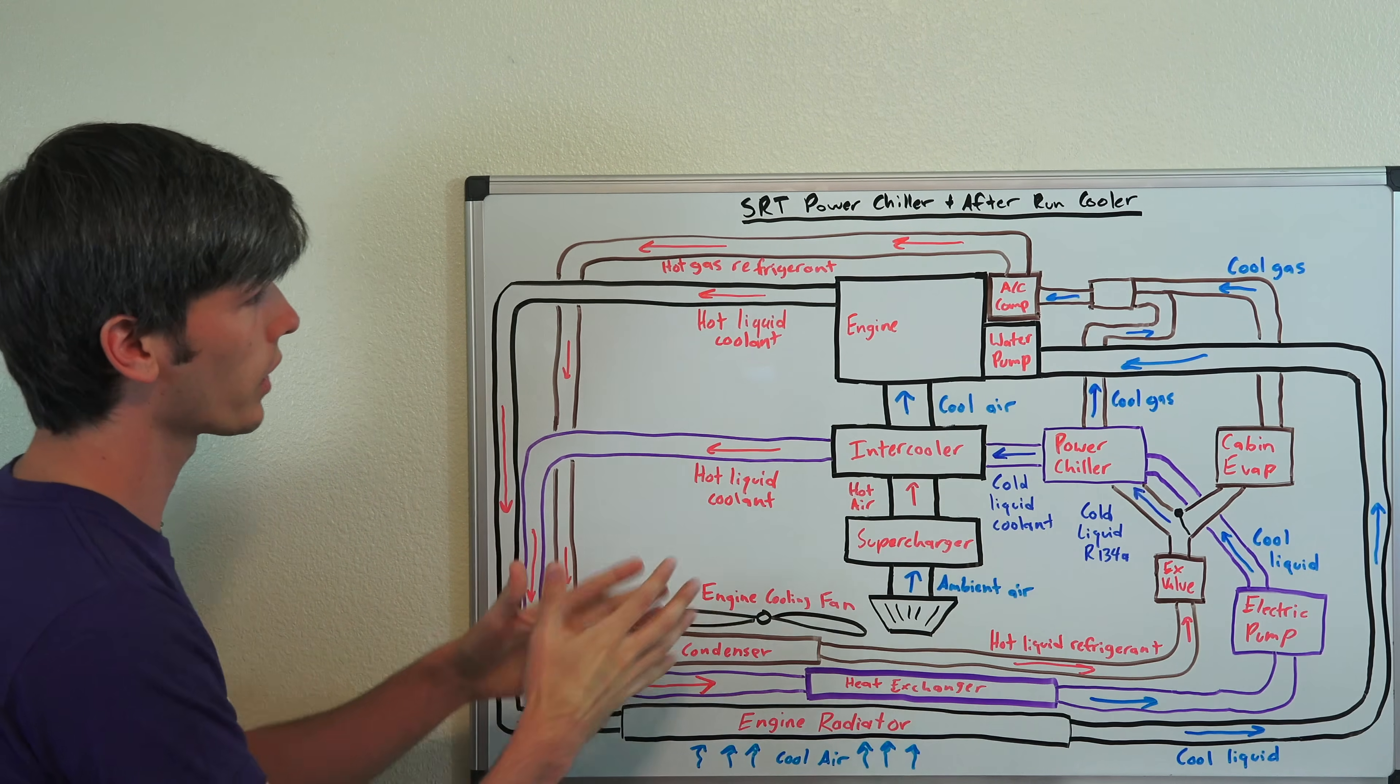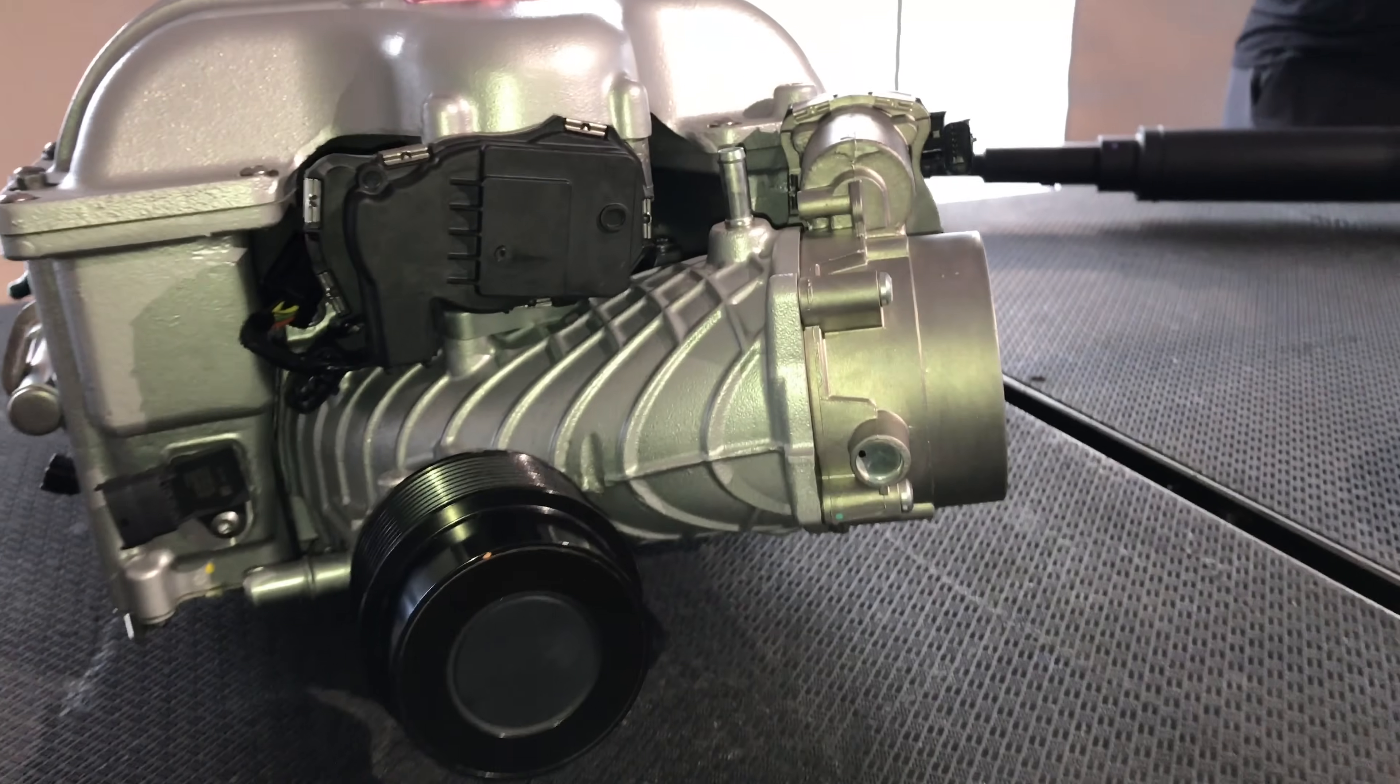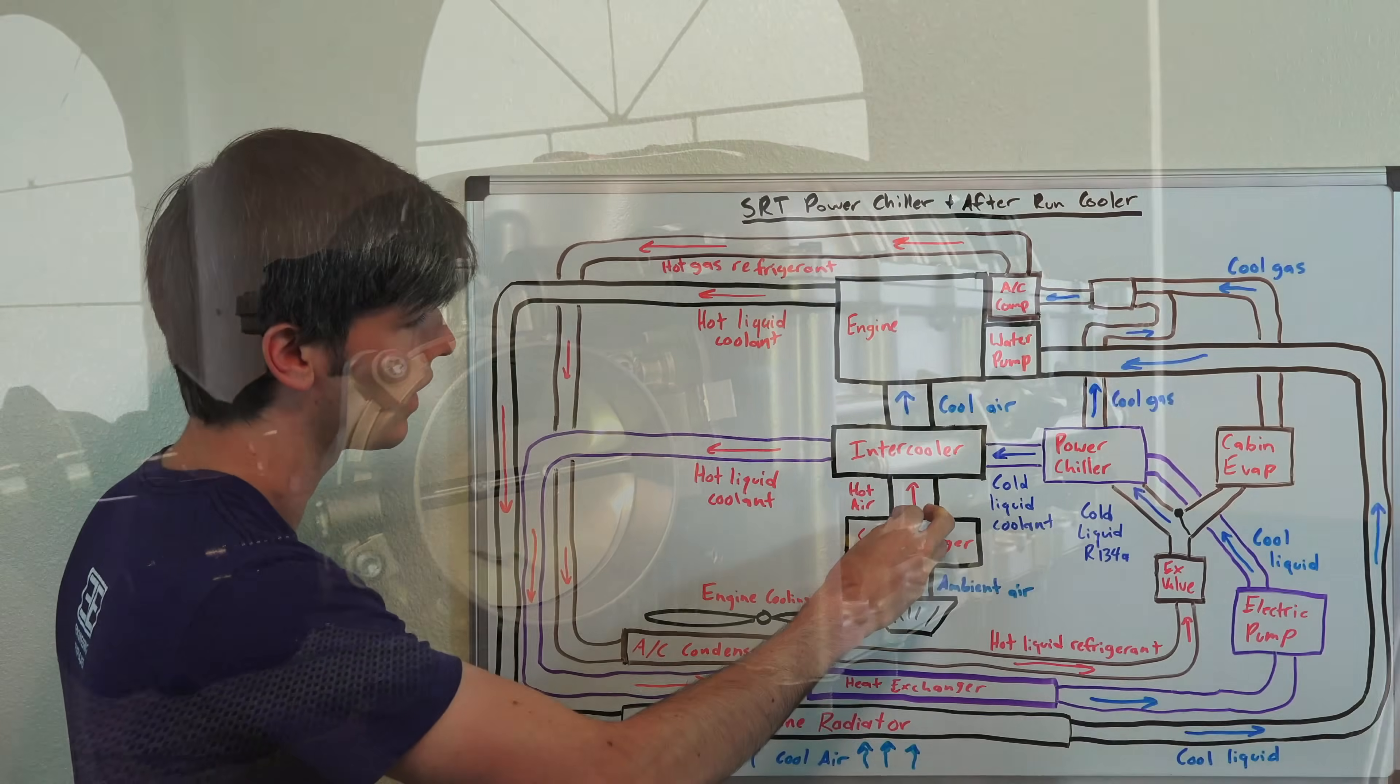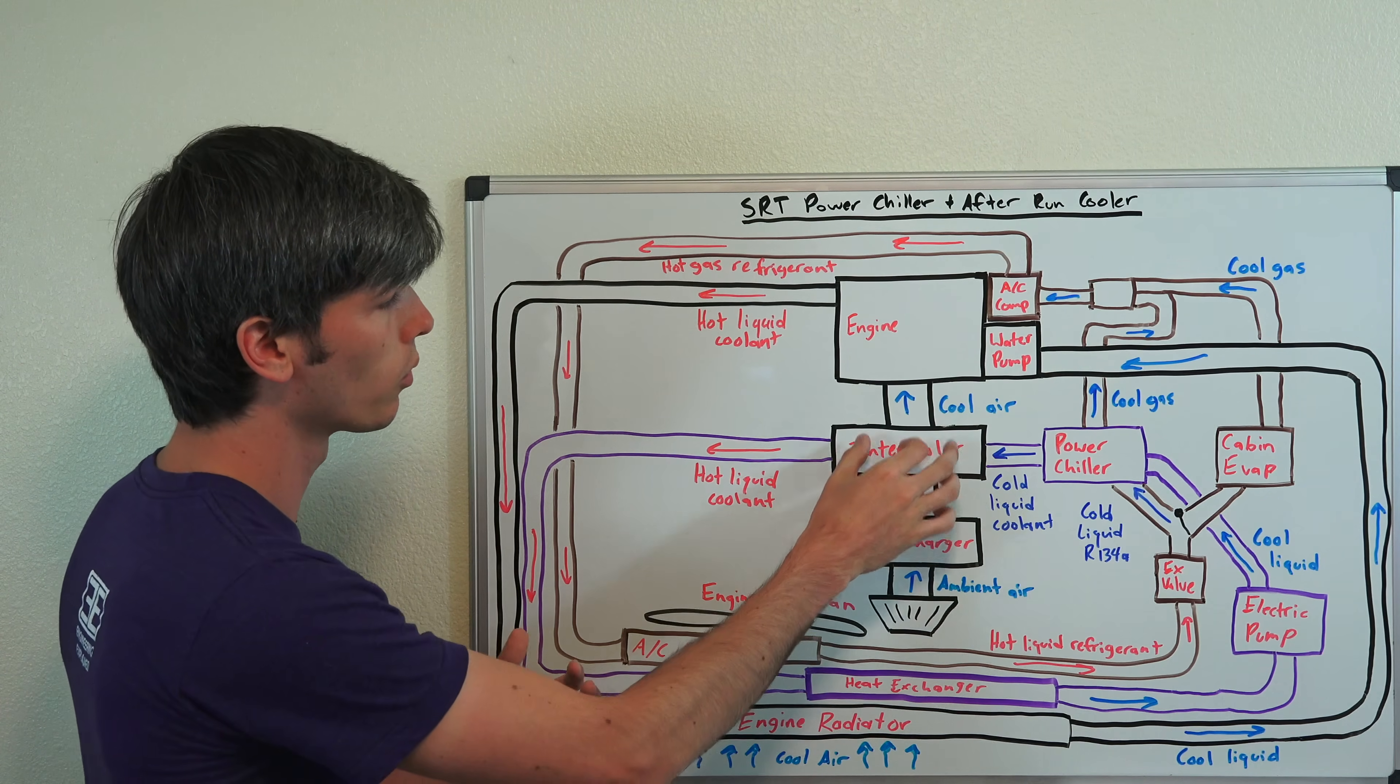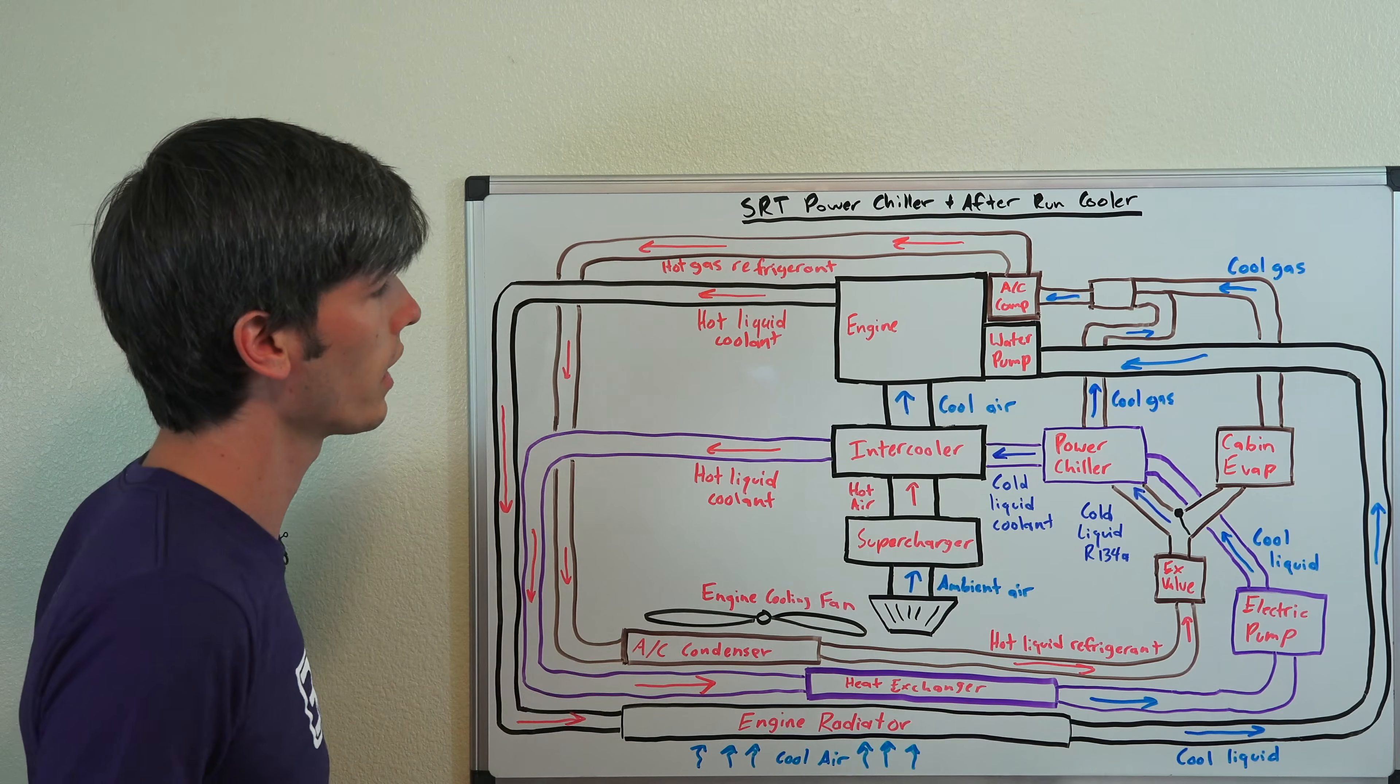So, starting off with the very first thing, let's look at the engine. You've got, of course, your ambient air coming in through the air filter. It goes through the supercharger that compresses that air, heats it up. So, you've got hot air. You don't want to put hot air in the engine, that's less dense, more likely to have knock. So, you run it through an intercooler. Then you have cooler air and send that air into the engine.